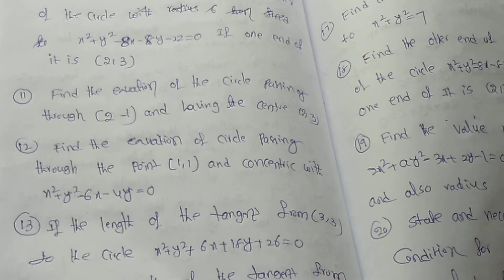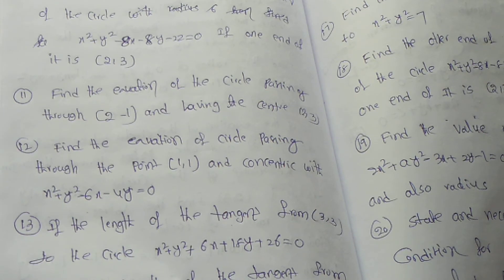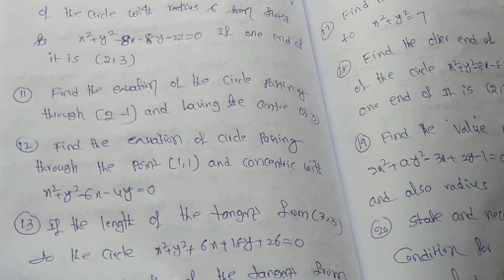Thirteenth question: Find the length of the tangent from (3, 3) to the circle x square plus y square plus 6x plus 18y plus 26 equal to 0.